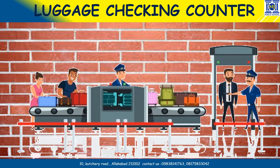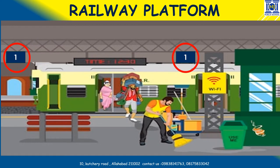Before we get inside the platform, children, what happens? Our luggages are checked at the luggage counter. The luggage counter is where we check our luggages. After we get our luggage checked, we then move inside the platform. Platform is the place where a train halts or stops.